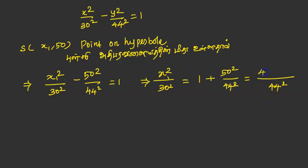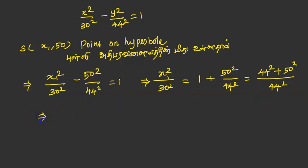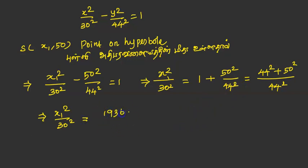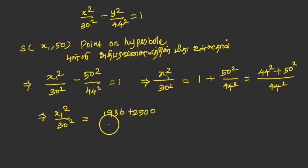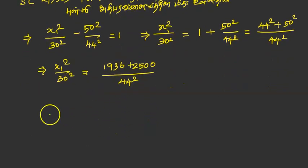44² plus 50² equals: 44² is 1936, plus 50 times 50 is 2500. So x₁² / 30² equals 4436 / 44². Therefore x₁² equals 4436 / 44² times 30². Taking the square root: x₁ equals the square root of 4436 times 30² divided by 44².